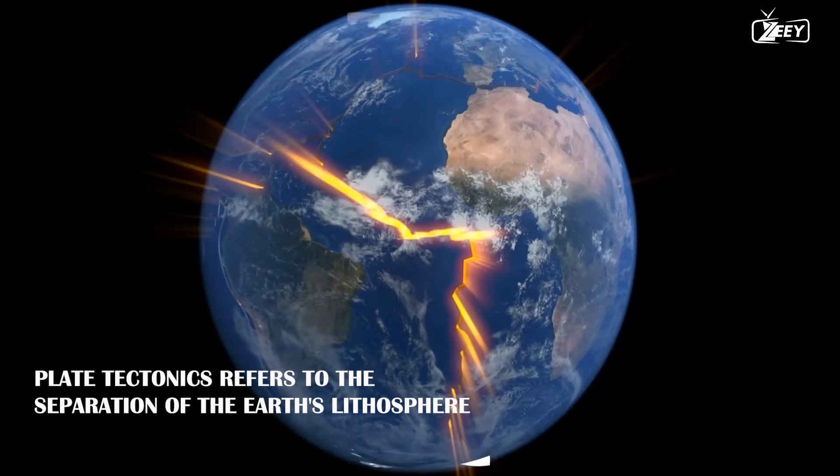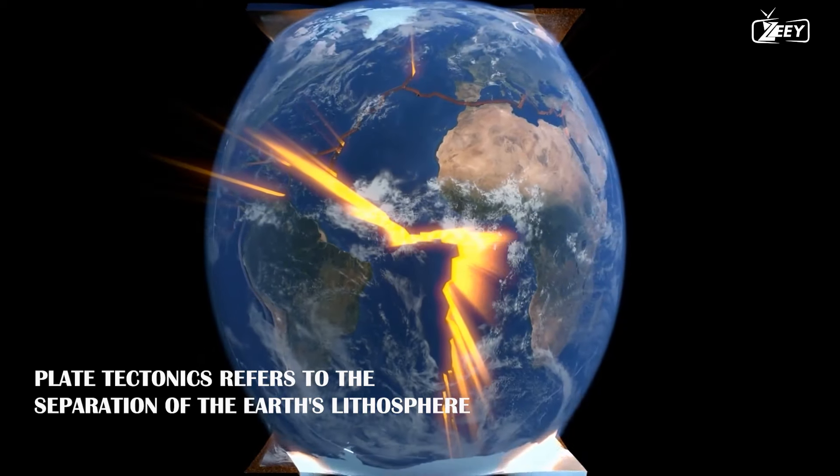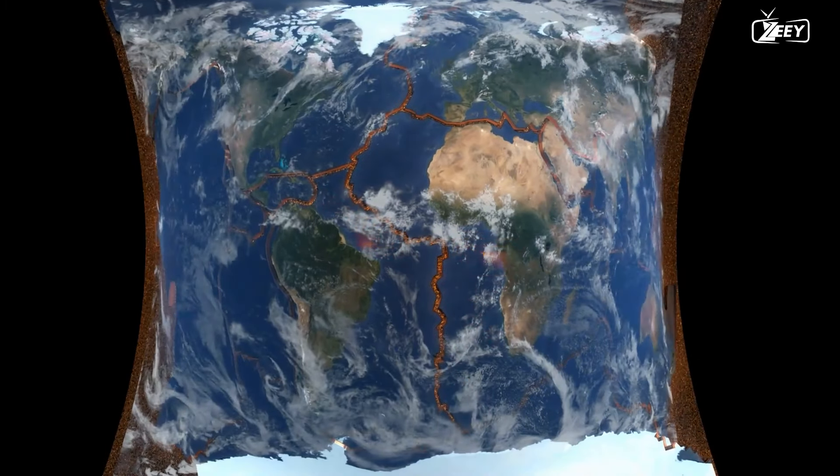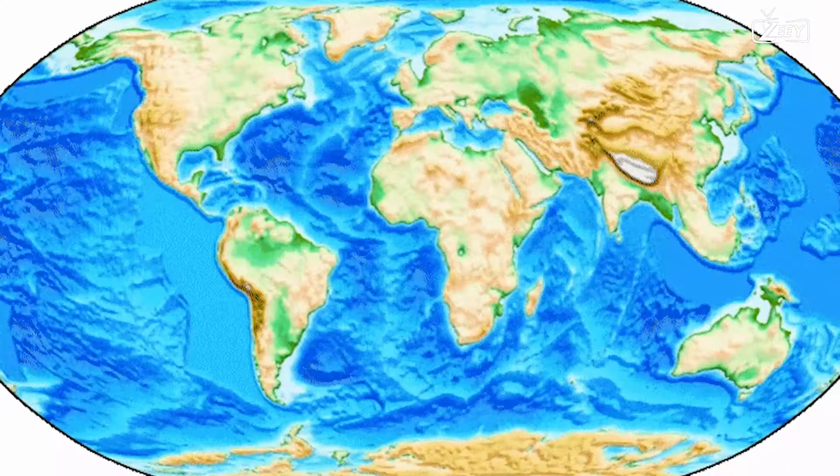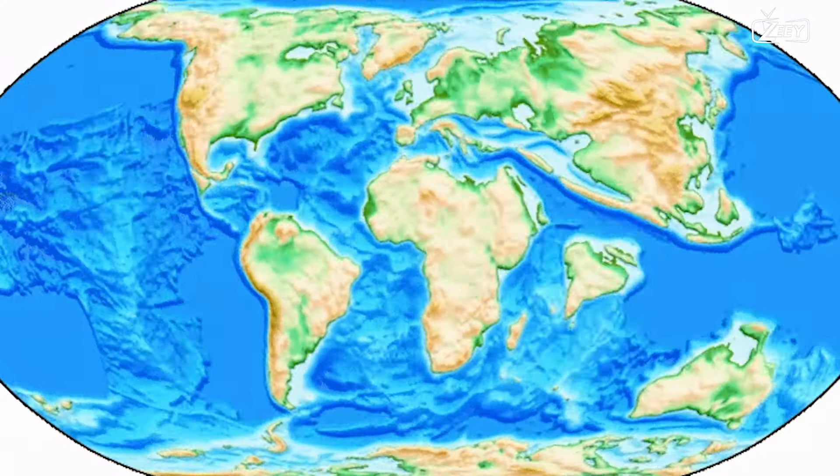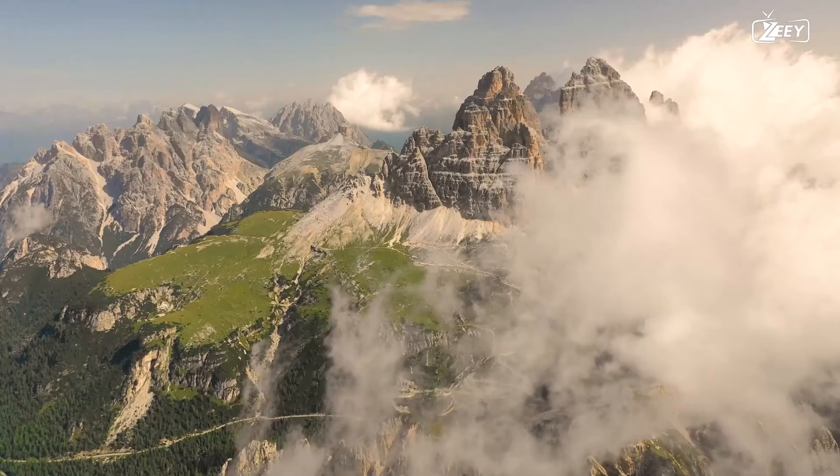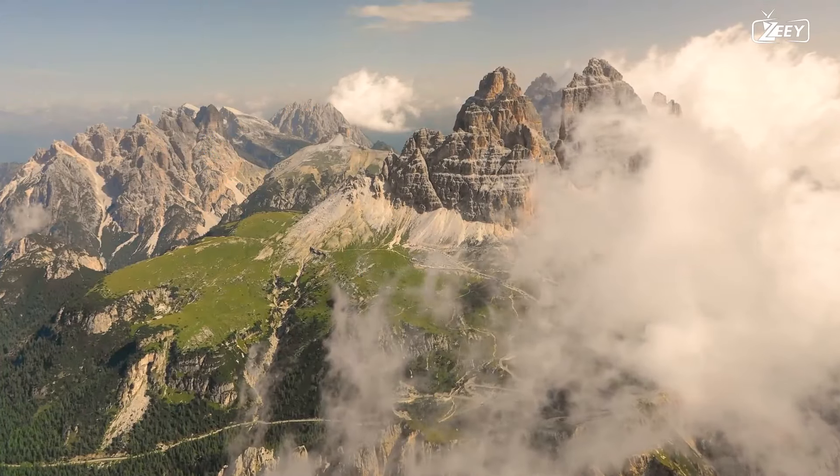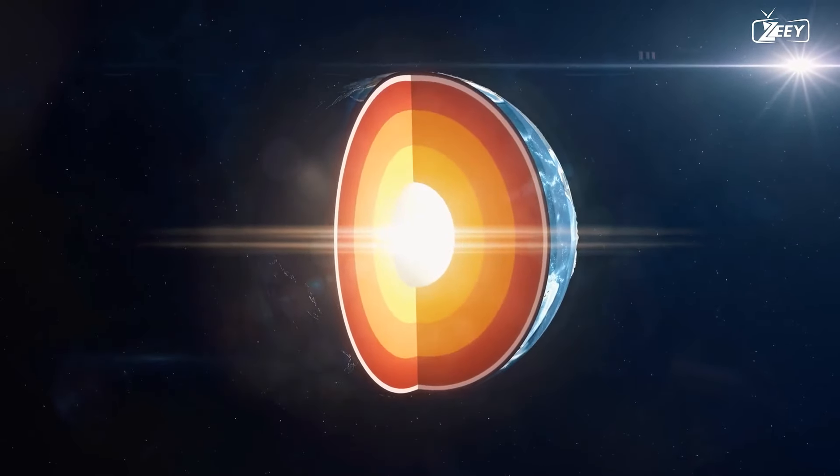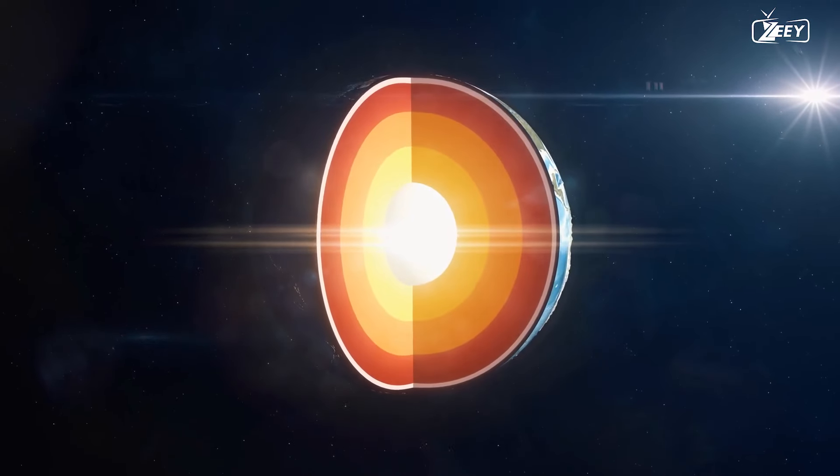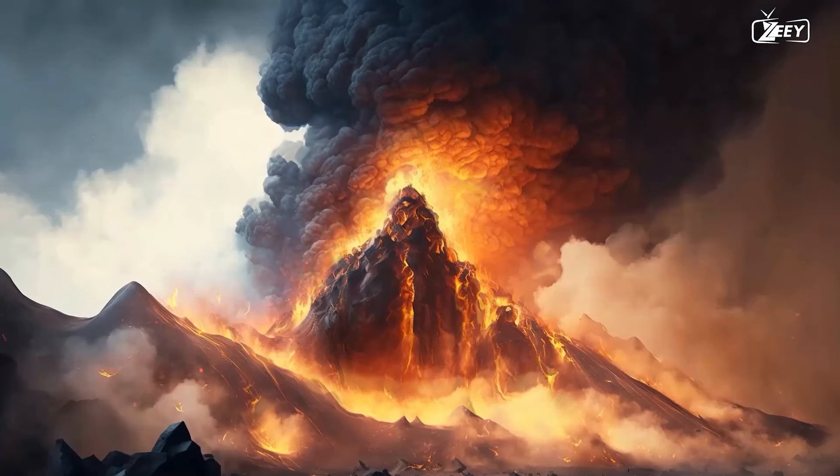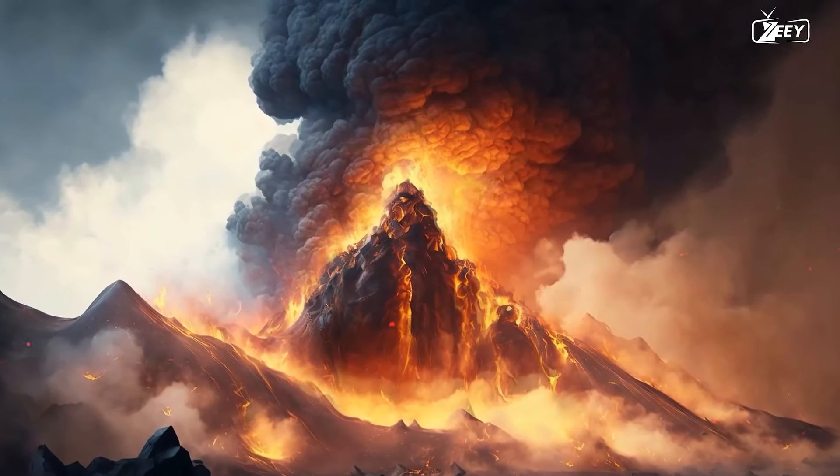Plate tectonics refers to the separation of the Earth's lithosphere, which is the rigid outermost shell that contains the crust and highest section of the mantle into separate parts known as plates. These plates move slowly across the Earth's surface, clashing and tearing apart in some places. These plates' movement is critical in the development of mountain ranges, the recycling of nutrients, and the discharge of gases from the Earth's mantle. Furthermore, plate movement helps to remove heat from the Earth's mantle, which can help to minimize the pressure building that leads to massive volcanic eruptions.